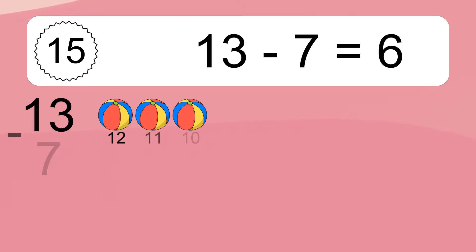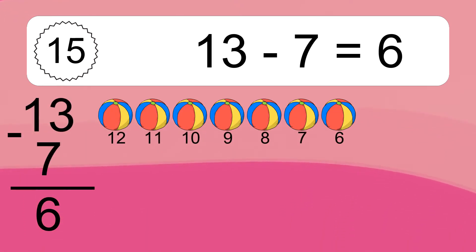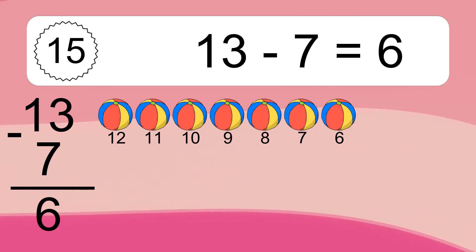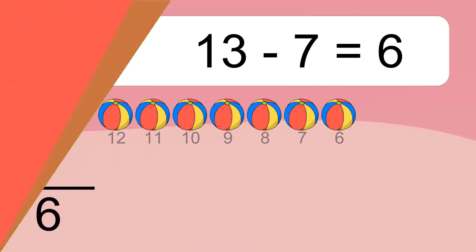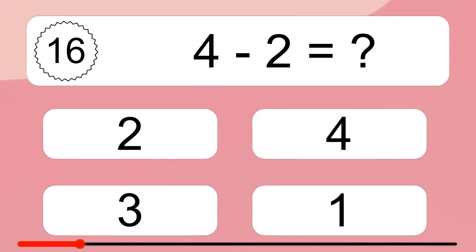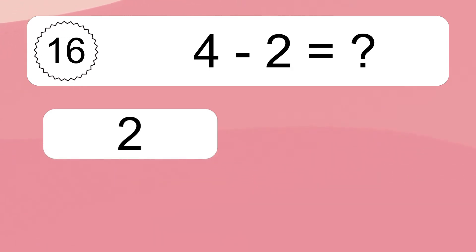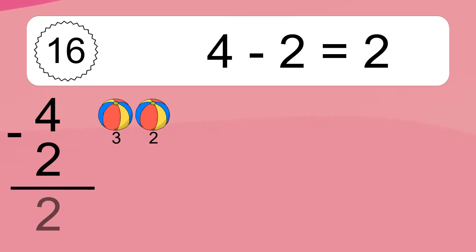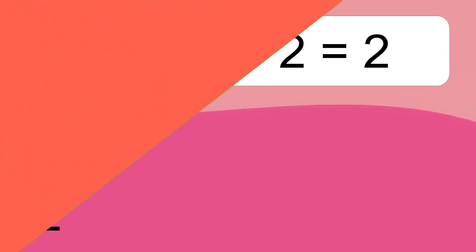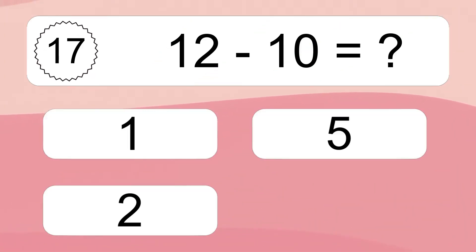13 minus 7 equals 6. Let's count it: 12, 11, 10, 9, 8, 7, 6. 4 minus 2 equals what? 4 minus 2 equals 2. Let's count it: 3, 2. 12 minus 10 equals what?